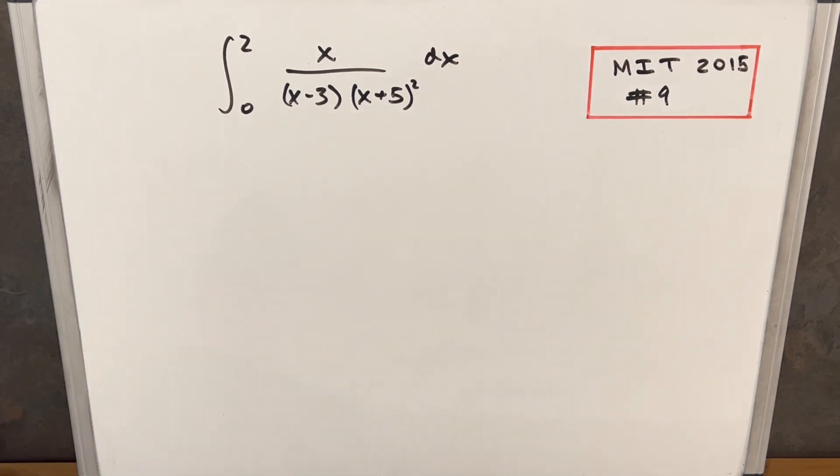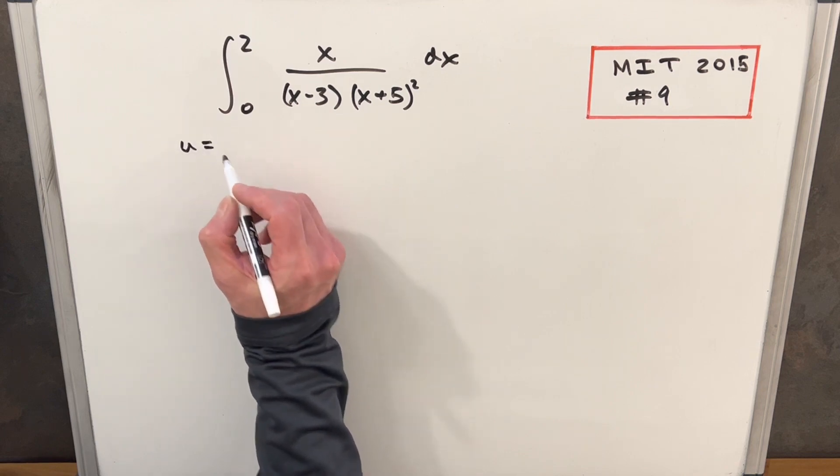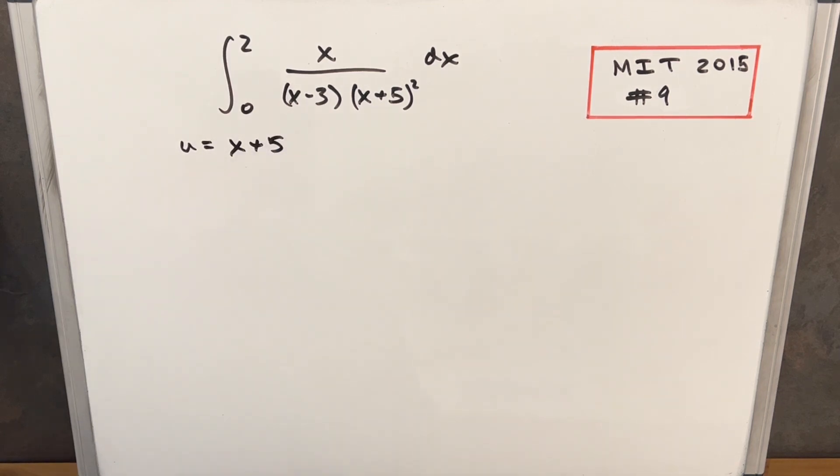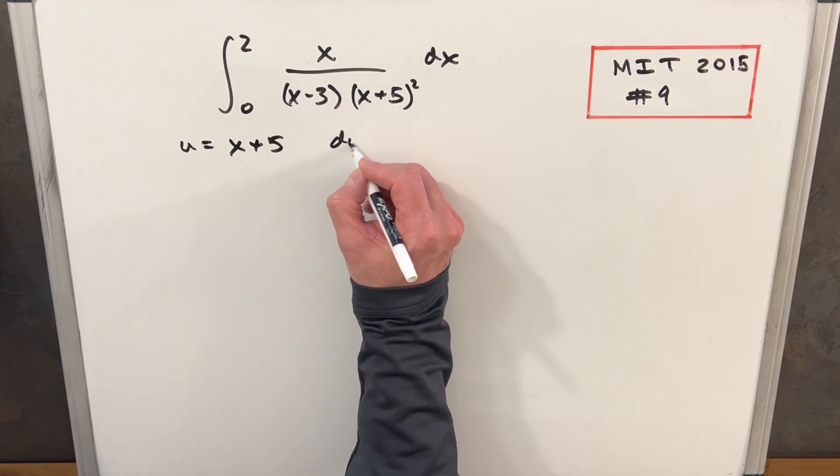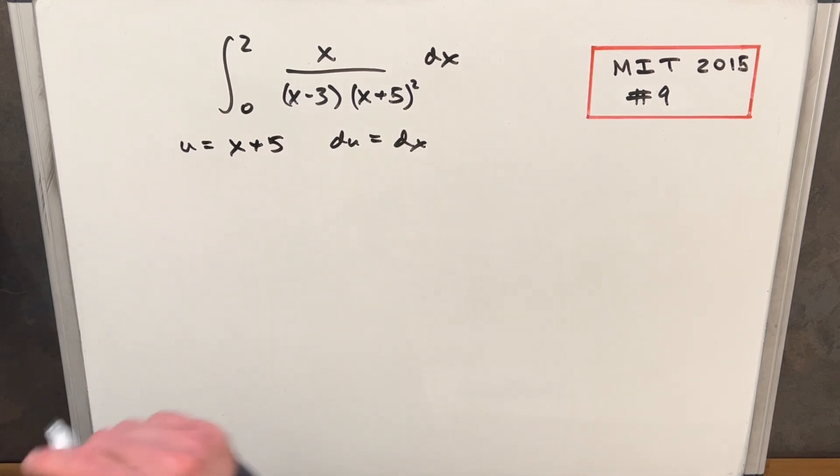Before I get started on the partial fractions, one thing I did, I liked it, it seemed to help a little bit, even though I don't know if it really seems to matter, but I did a u substitution to set it up first. So I'm going to call my u equals x plus five, and then that makes our du equal to dx, taking the derivative of x plus five is just dx.